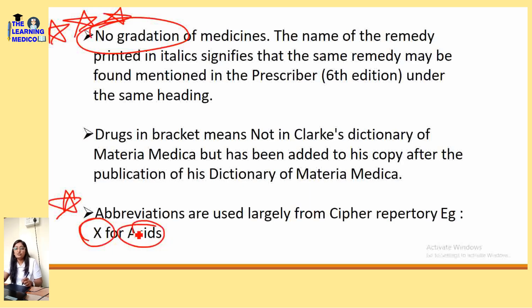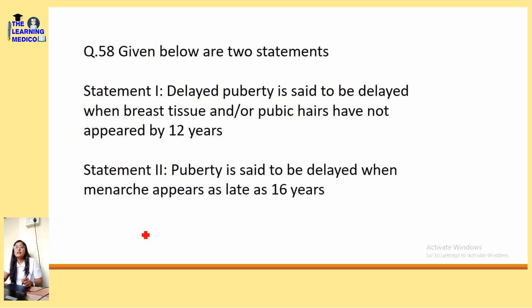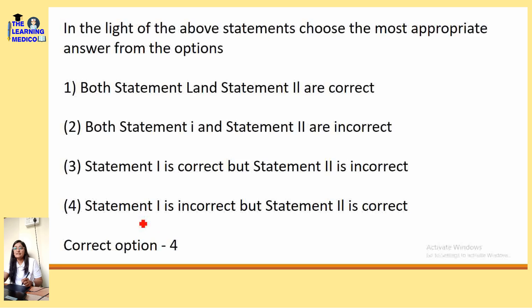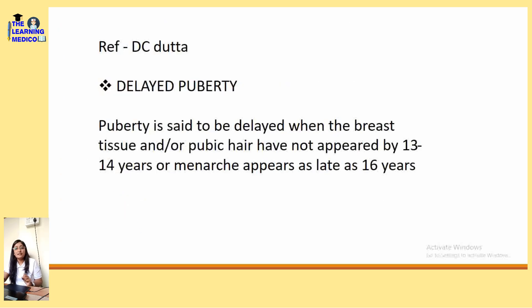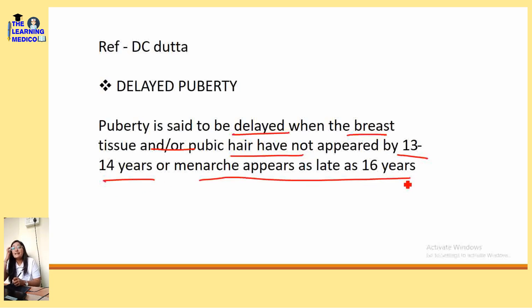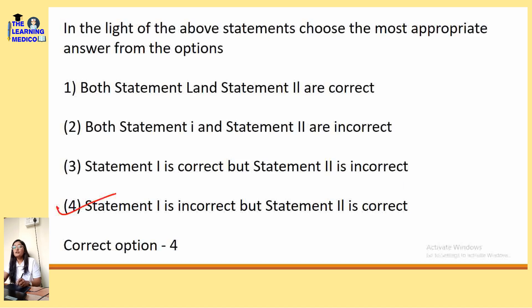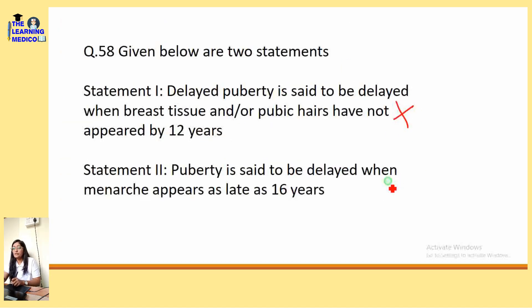Two statements on delayed puberty: statement 1 — delayed puberty is when breast tissues and pubic hair have not appeared by 12 years; statement 2 — puberty is said to be delayed when menarche appears as late as 16 years. The correct option is option number 4. Puberty is delayed when breast tissues or pubic hairs have not appeared by 13 to 14 years, so statement 1 is incorrect and statement 2 is correct.